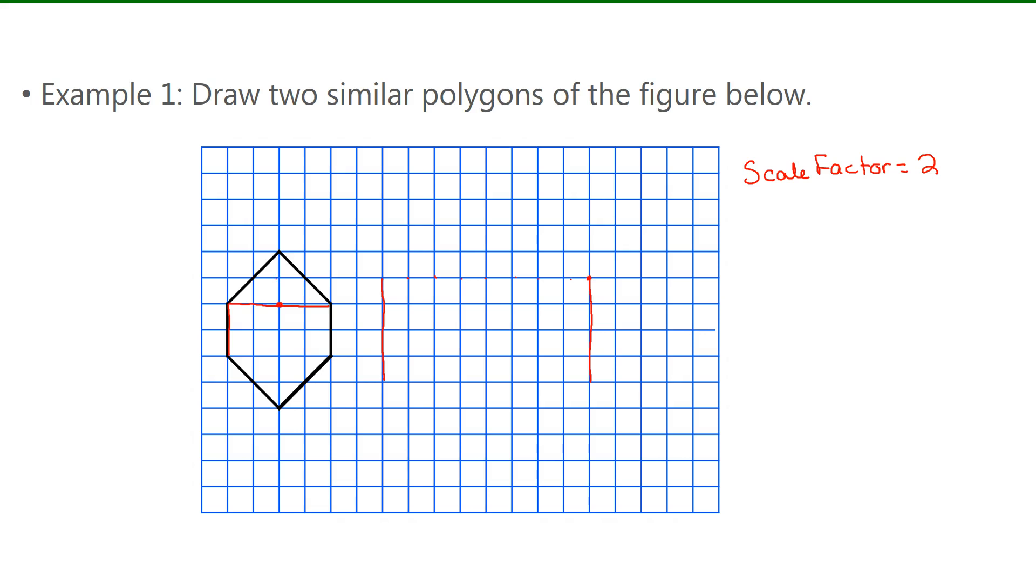Now in the middle here, this is up 2 blocks, and then it's also down 2 blocks. So I'm going to go up 4, 1, 2, 3, 4, and down 4, 1, 2, 3, 4. Then join all those up with a ruler.